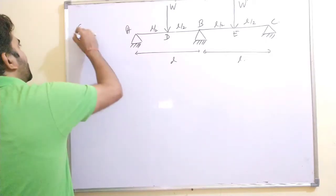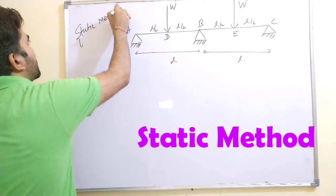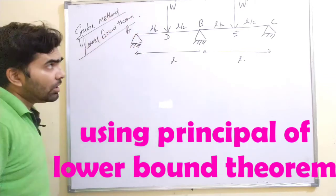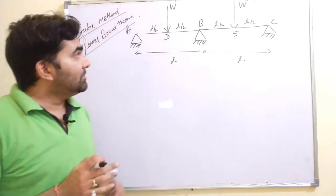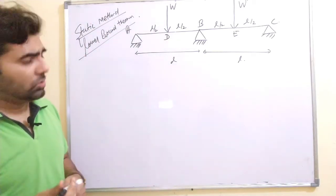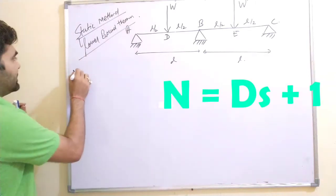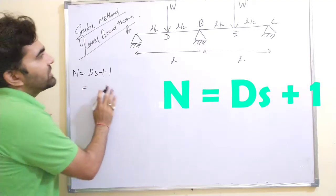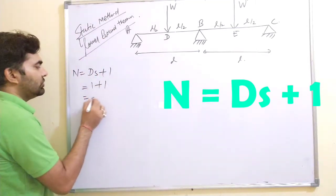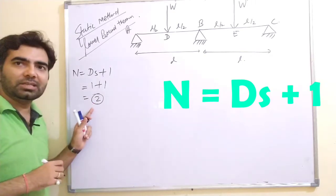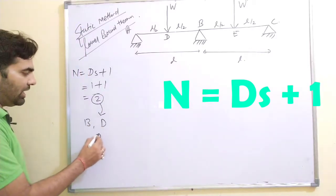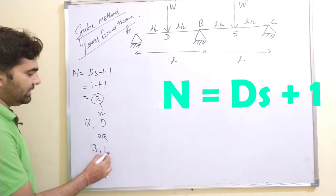The static method is also called the lower bound theorem. In this theorem, we first need to know the minimum number of plastic hinges required for complete collapse of the structure. The formula is ds plus 1, where ds is the degree of static indeterminacy. In this problem, the degree of static indeterminacy is 1, so 1 plus 1 equals 2 — meaning a minimum of 2 plastic hinges are required.